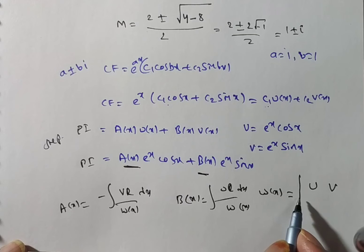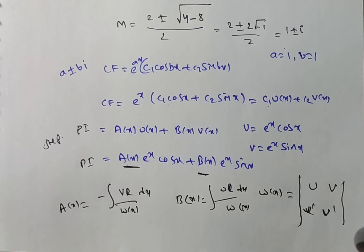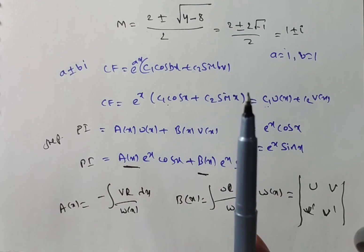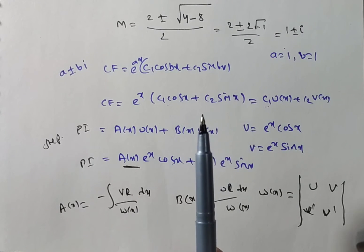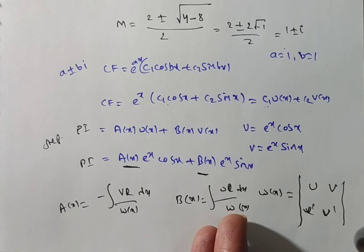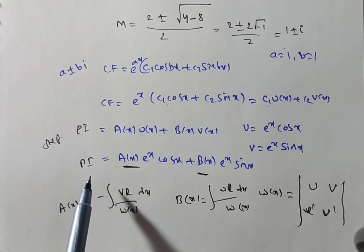The Wronskian is the determinant W(x) = |u  v; u'  v'|. We know v(x) = e^x·sin(x) and R(x) = e^x·tan(x) from the right-hand side of the equation. We will find W(x) now, then substitute into the formulas for a(x) and b(x), and finally combine a(x) and b(x) into the particular integral to get the general solution CF + PI.